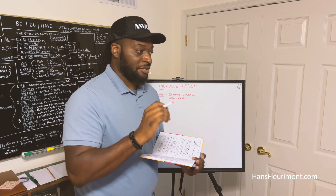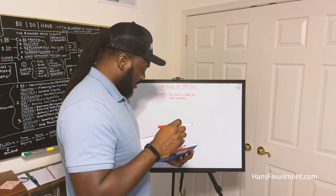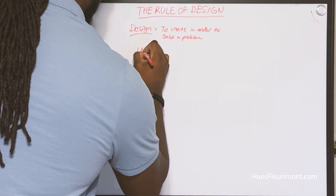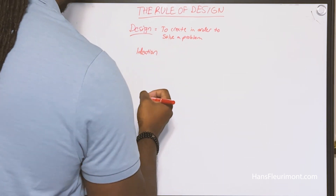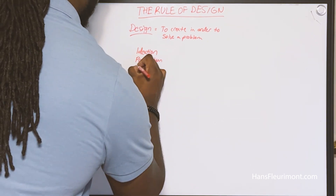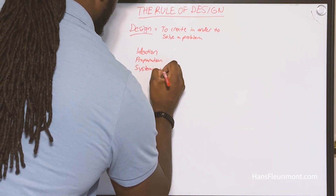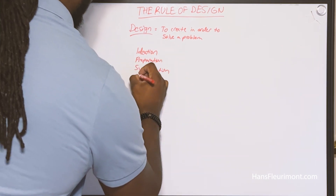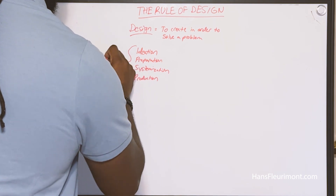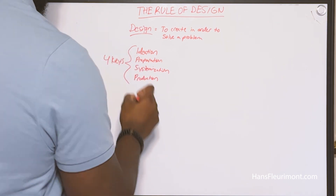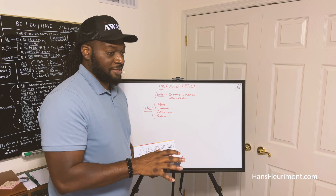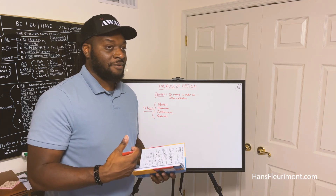Good design is effective. There are four key stages in design that you need to understand. The first one is ideation, the second is preparation, the third is systemization, and the fourth is production. Any design goes through these stages.